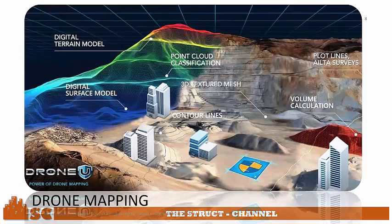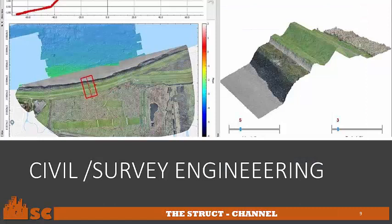Drone mapping can be utilized using a digital terrain model, where you fly your drone, take shots, and process them in software to utilize point cloud classification, digital surface modeling, textured meshing, contour lines, volume calculation, and civil survey engineering. Here is a drone shot having dissected a certain point on the road, where you can see the section elevation of the area.